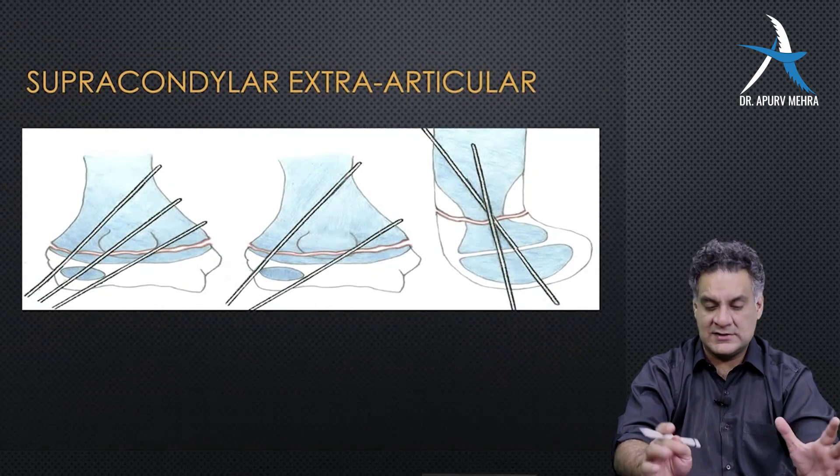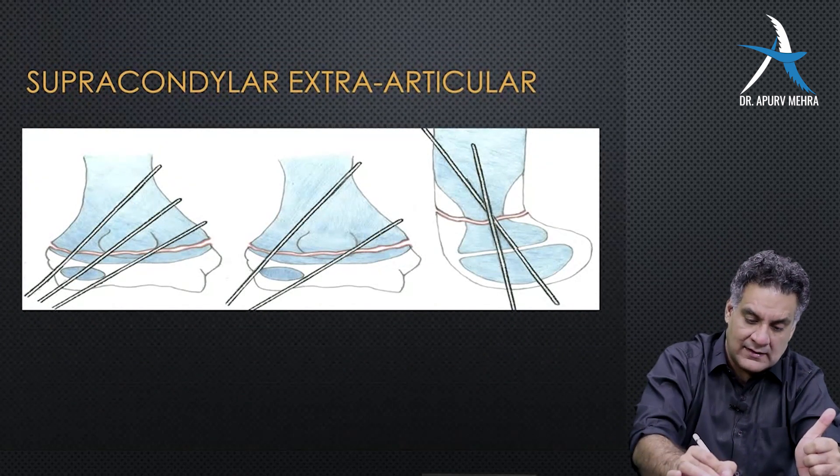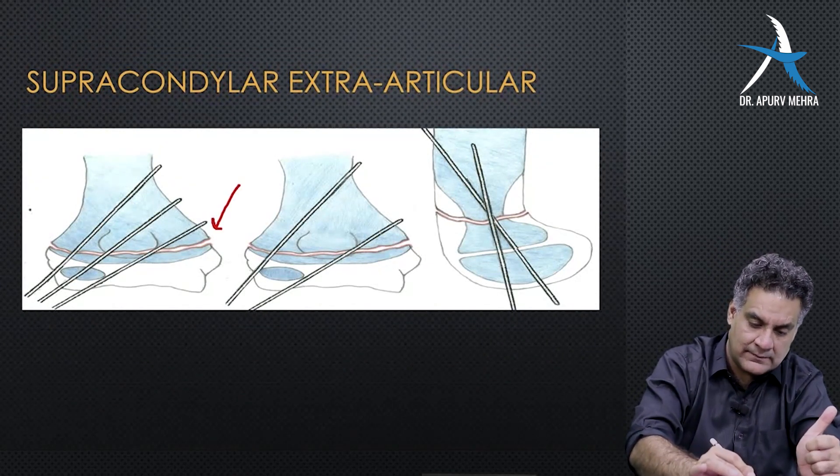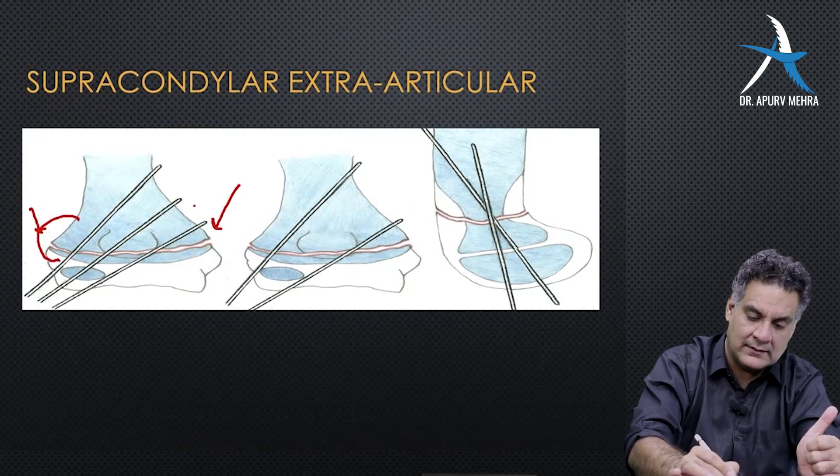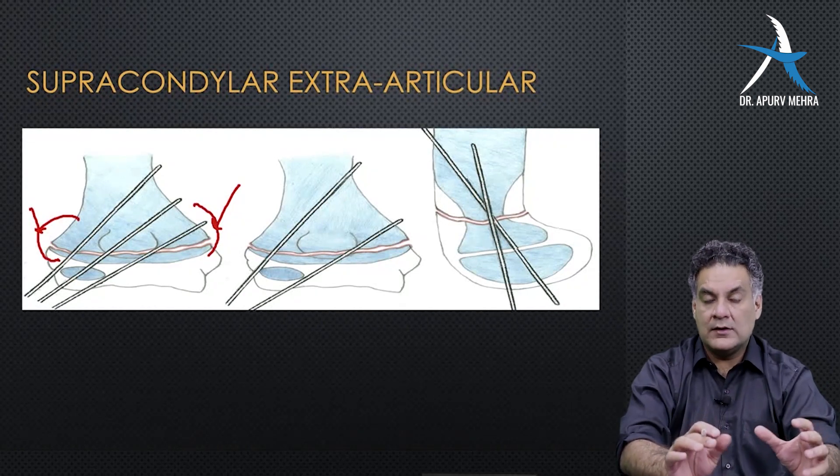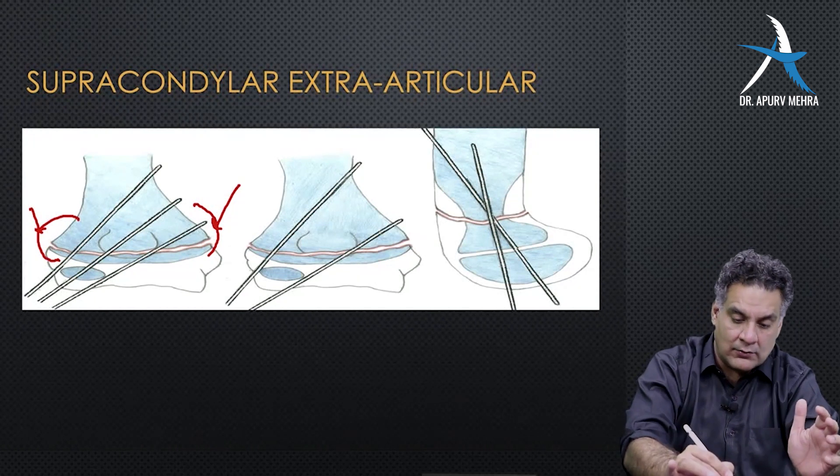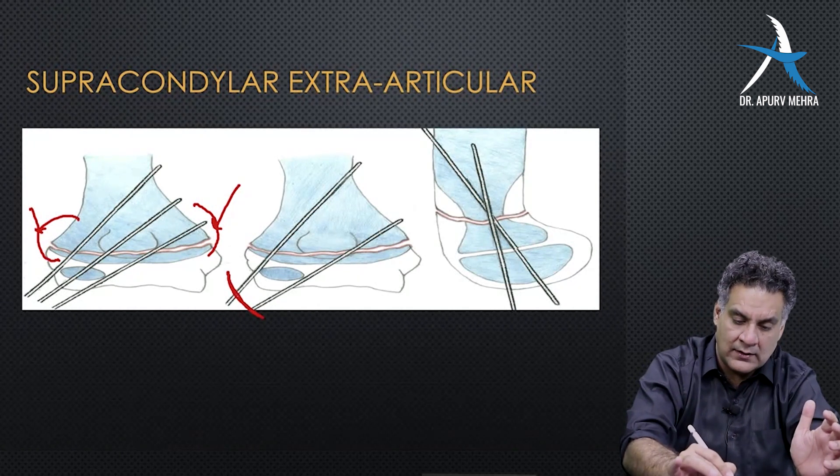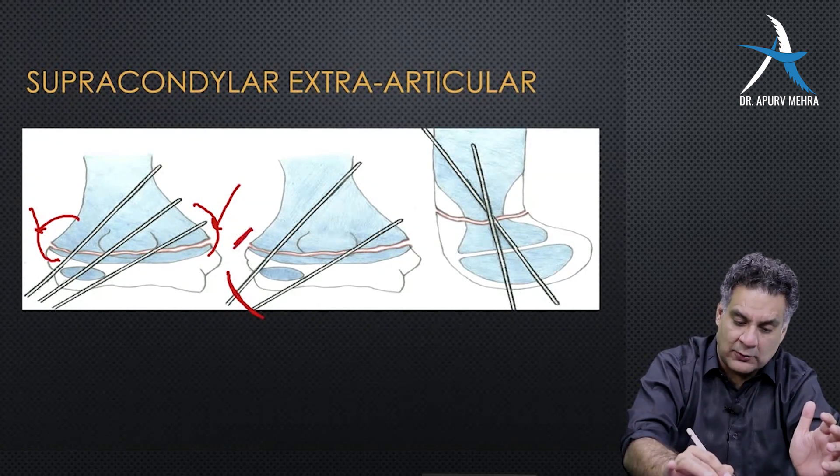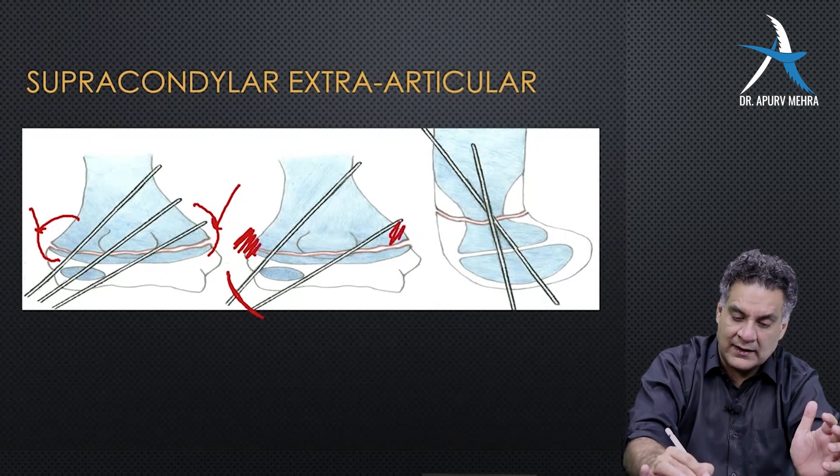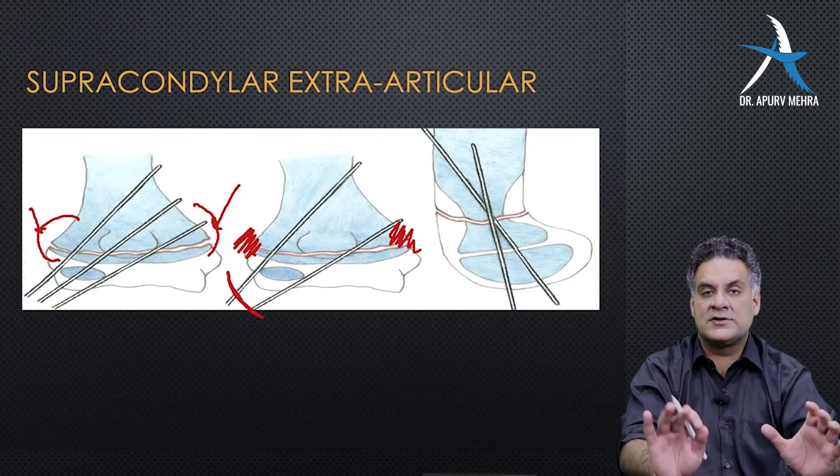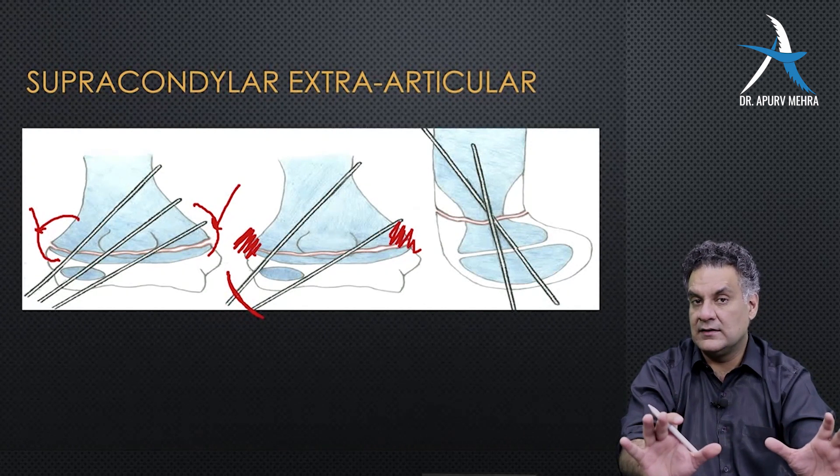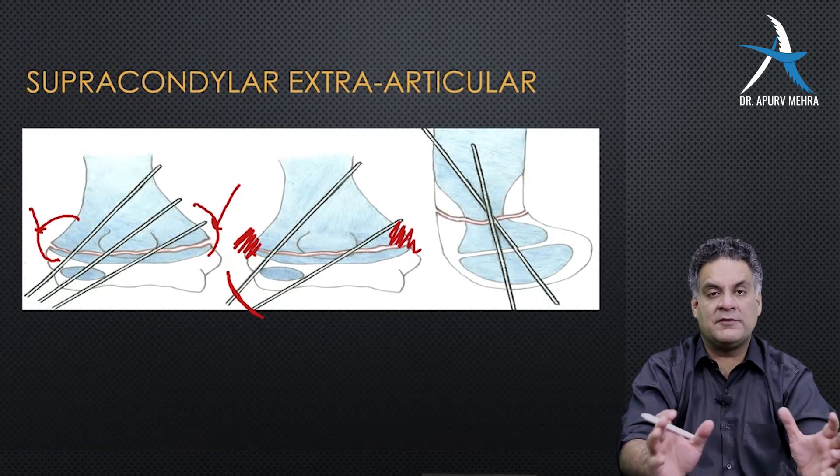Let's look at this fracture. Supracondylar fracture humerus. It is an extra-articular fracture. Here, there is hematoma here. What do you do? You reduce it and make a small incision around the elbow. Put it inside. You don't expose the hematoma. That's why this is a closed reduction and fixation, because you did not expose the fracture hematoma.